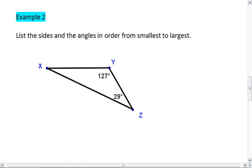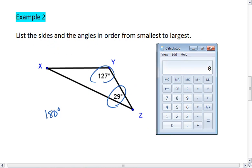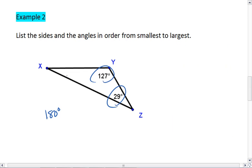Well, we're given two angles of this triangle, and we remember that all the angles in a triangle sum to 180 degrees. Meaning, if one angle is 127 and another is 29, we can do 180 minus 127 minus 29, and we're left with 24 degrees. This third angle must be 24 degrees.